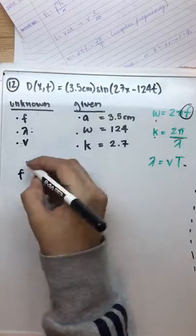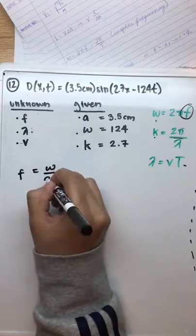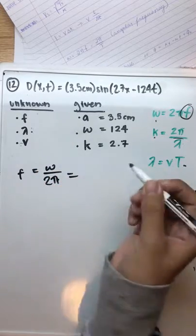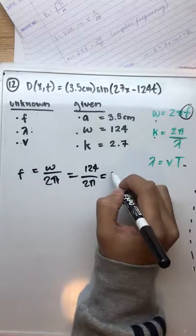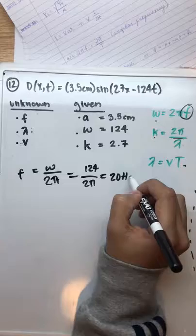So we get f is equal to w over 2 pi, which will be 124 divided by 2 pi, and we get a frequency of 20 hertz.